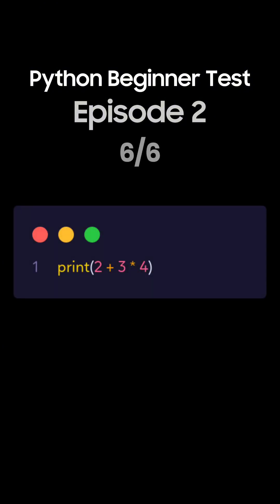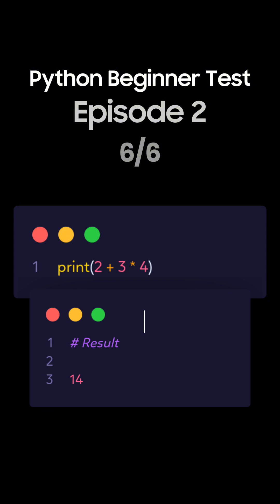Question 6. What's the output of this Python code showing operator precedence? This is the correct answer. Multiplication has higher precedence than addition. So, 3 times 4 equals 12, and then 2 plus 12 equals 14.